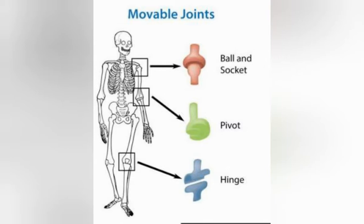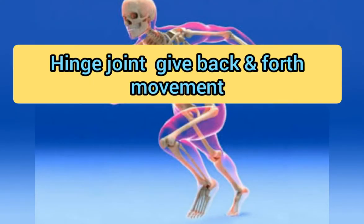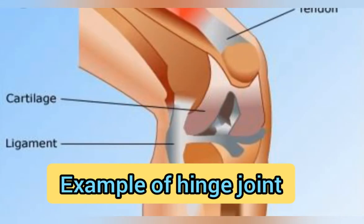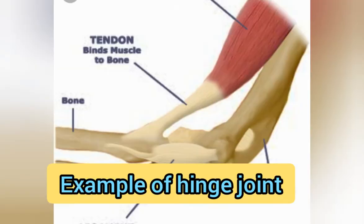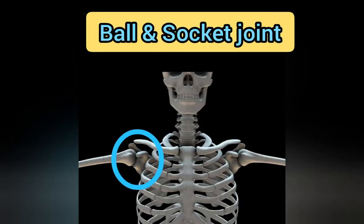Hinge joints give a back-and-forth movement, a to-and-fro movement, just like a door. The hinge is the point at which the door is attached, so it gives back-and-forth movement. Similarly, our hinge joints allow this movement. For example, the knee and elbow are examples of hinge joints.